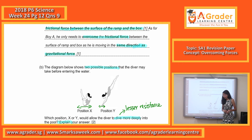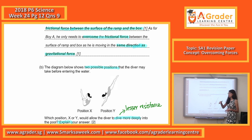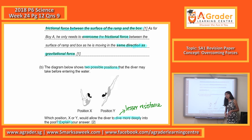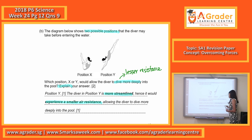Position Y has a smaller surface area — we call this a streamlined body shape. Position Y is more streamlined, so it has a lesser surface area in contact. This means lesser air resistance when diving, and when entering the pool, lesser water resistance as well, because of the streamlined body shape. Therefore, position Y allows the diver to dive more deeply into the pool.